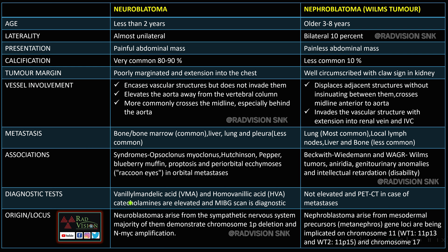Diagnostic markers for neuroblastoma are vanillylmandelic acid (VMA) and homovanillic acid (HVA) — raised catecholamines. MIBG scan is pathognomonic. VMA and HVA are not elevated in nephroblastoma. PET-CT can be used for metastatic neuroblastoma. Neuroblastoma arises from the sympathetic nervous system with chromosome 1p deletion and MYCN amplification, whereas nephroblastoma arises from mesodermal precursors (metanephros) with WT1 gene on chromosomes 11 and 17.